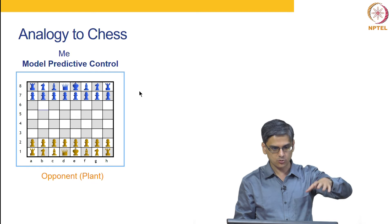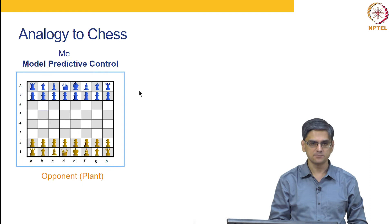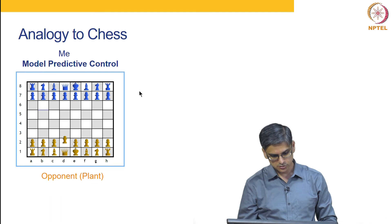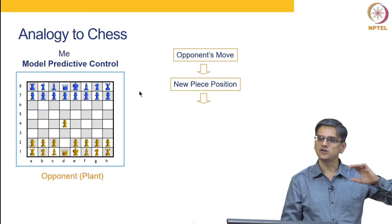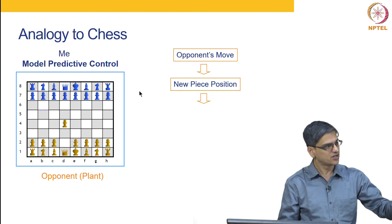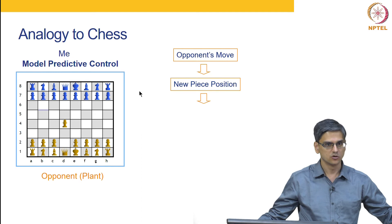So maybe I can also try to answer this question in an analogy to chess. Let us say you are MPC and you have your opponent which is the plant. So your opponent makes a move. You are going to make a move. How do you make a move? Based on opponent's current move, you kind of try to predict what opponent's future moves are going to be, but you are not going to predict only one future move, but you are going to predict 5 or 10 or 15 or 20 future moves.